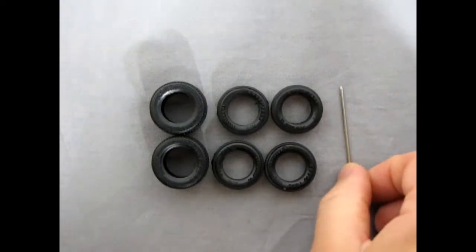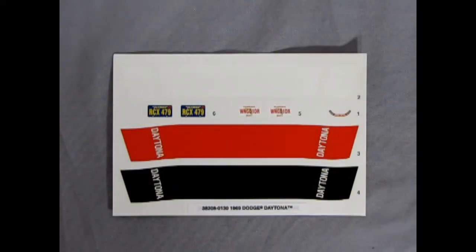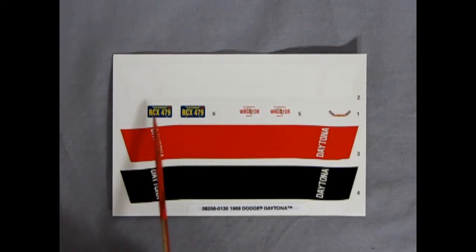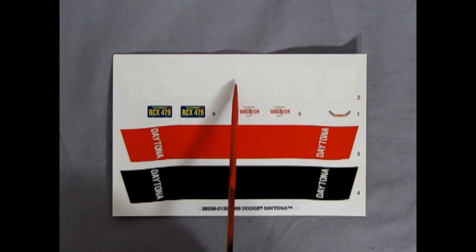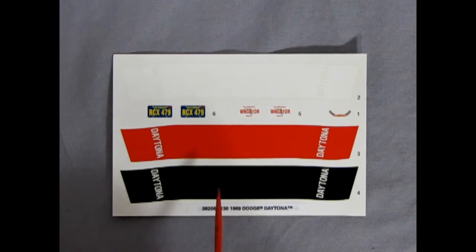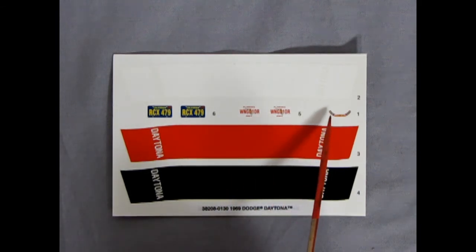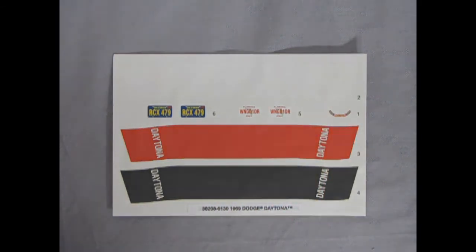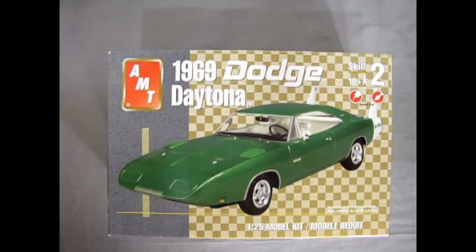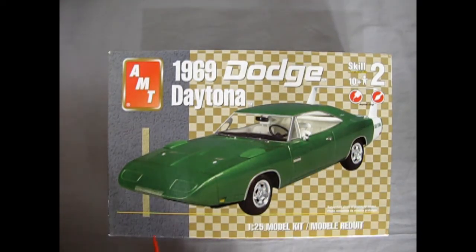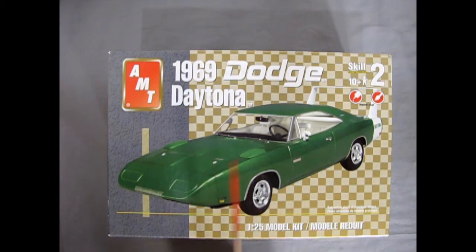Last but not least we have our decal sheet with a California license plate as well as one for Florida, so this is coast to coast. We have a white Daytona decal, red and black, so you do get choices for these for different colors. There is a nice air cleaner decal on here as well. That concludes our look at the AMT 1969 Dodge Daytona. Now if you've built this model in the past and you've got a really good example of it, please share it on our Facebook page.